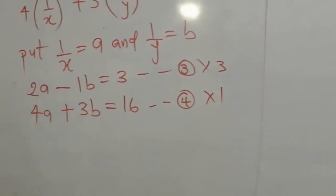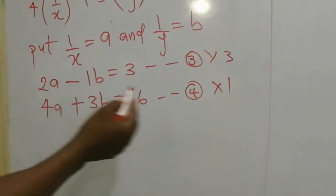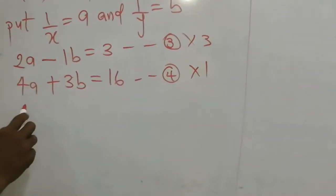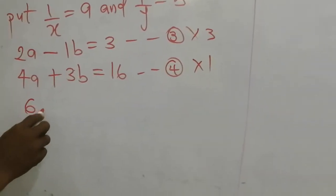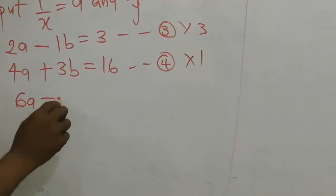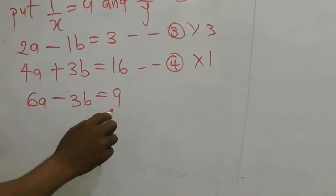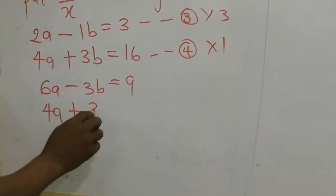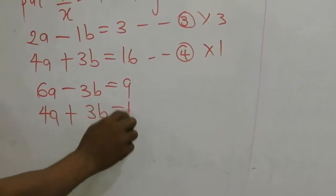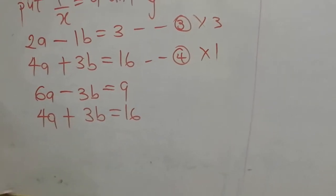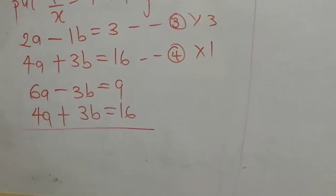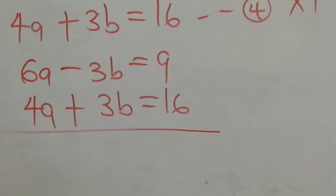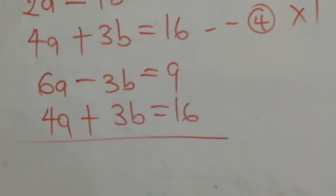You use 3 to multiply all of equation 3, and 1 to multiply all of equation 4. 3 multiply by 2a, we have 6a minus 3b equals 9. And 4a plus 3b equals 16. As we have it now, the coefficients of b are now the same. We can eliminate on b now.